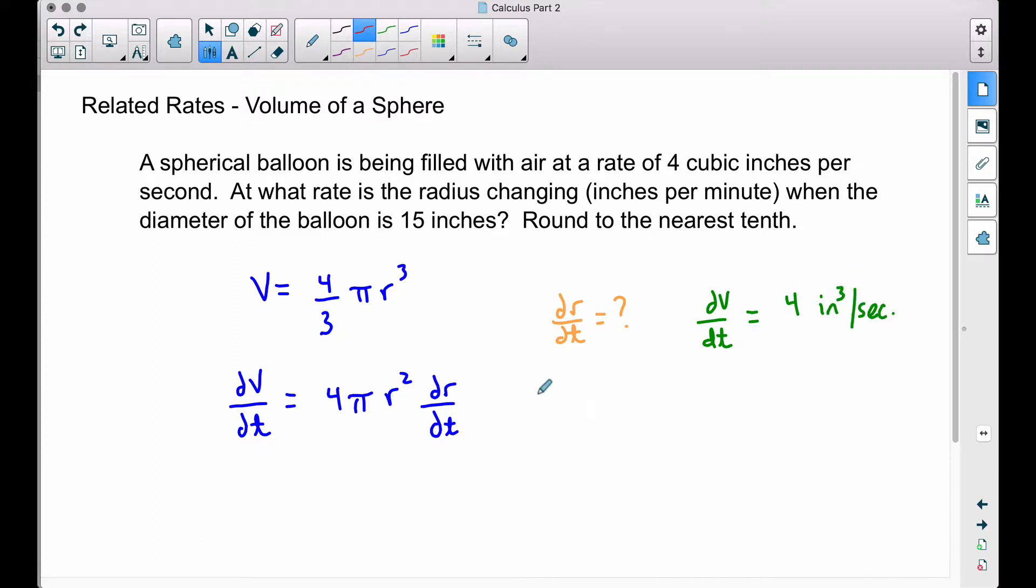Now we also need the radius and since we know the diameter at some point is 15 inches, let's take the diameter and divide it by 2. Therefore our radius is going to be 7.5 inches.